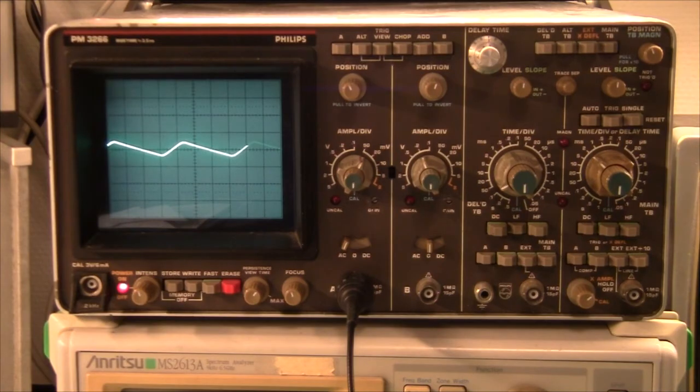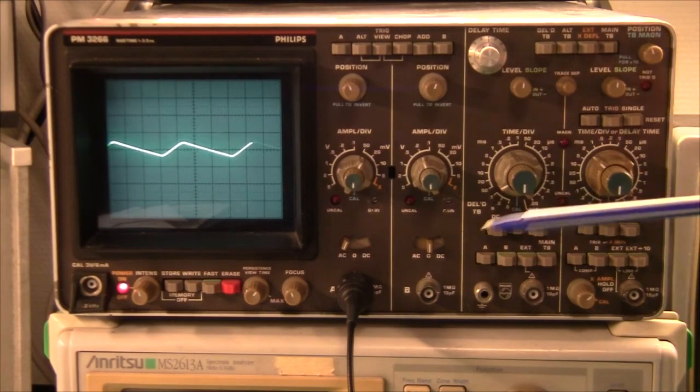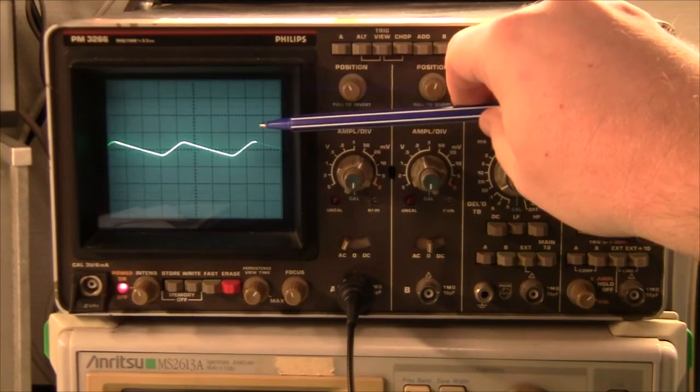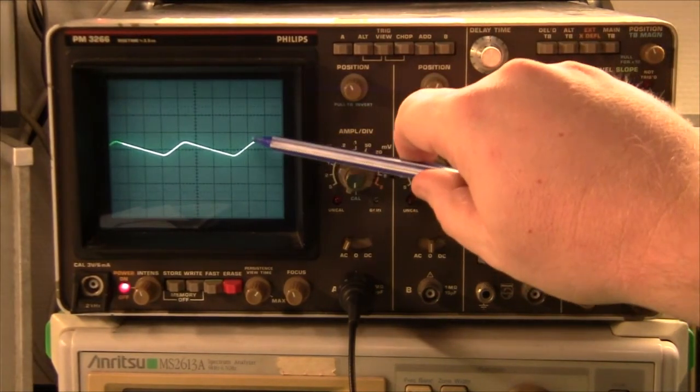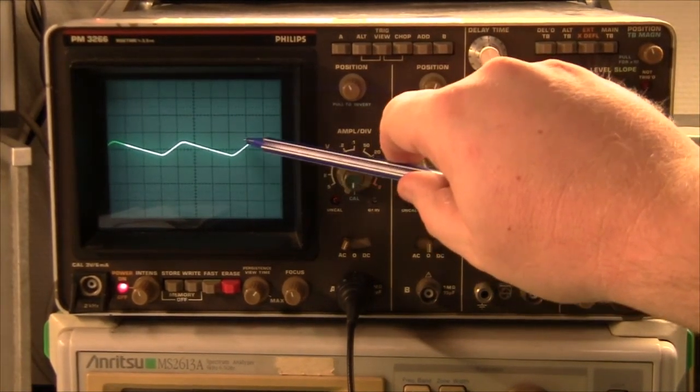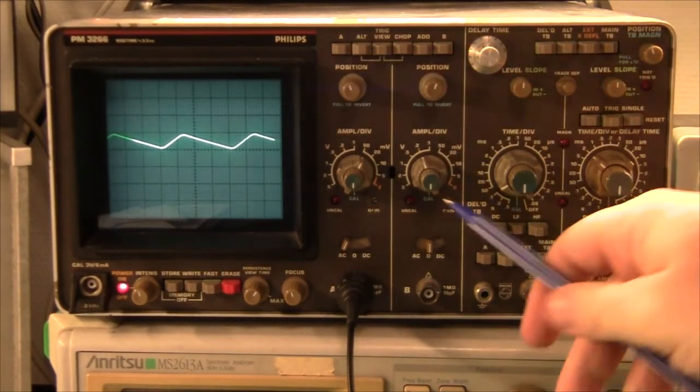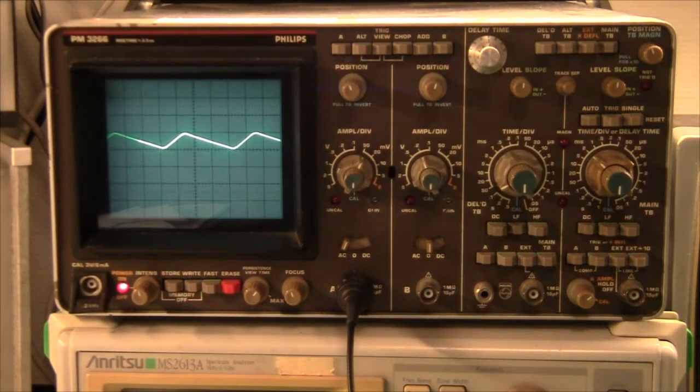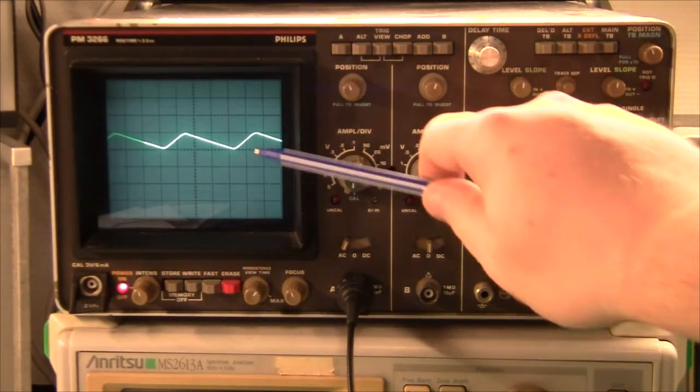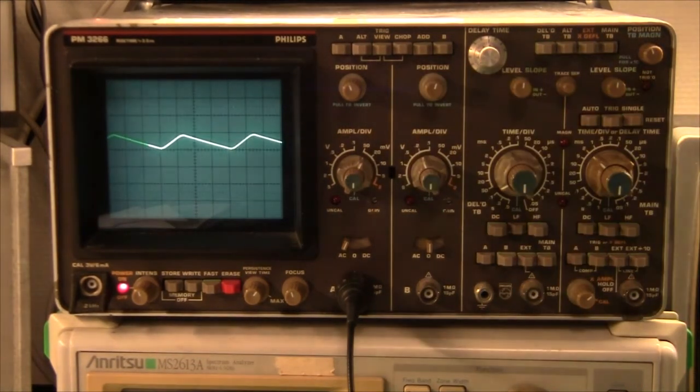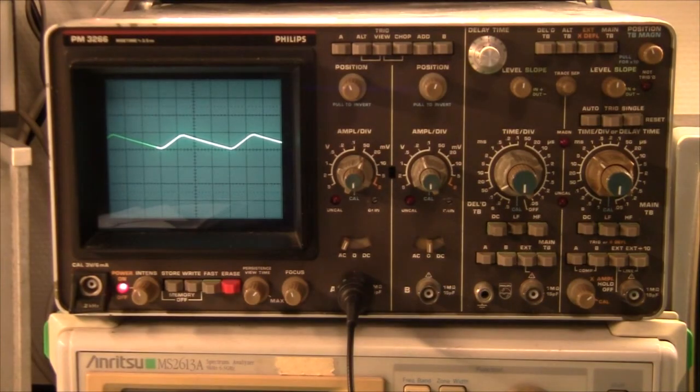And basically there you have it. That is our ripple. And there is no cursor or anything for measuring stuff here, but we can count divisions here. And there's roughly one division. And we have 0.5 here, we have 50 millivolts. So we have about half a volt peak to peak showing here. So that is our ripple using this circuit.